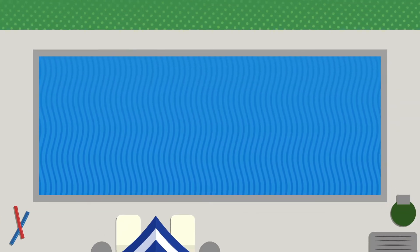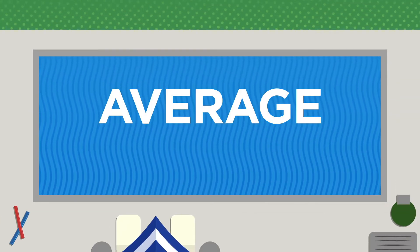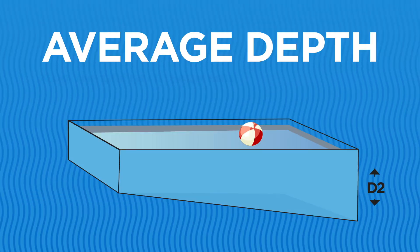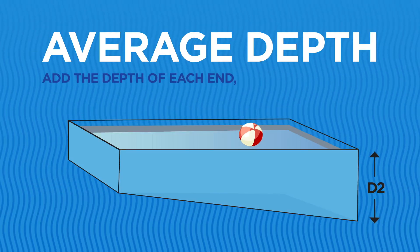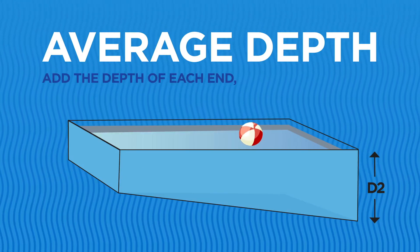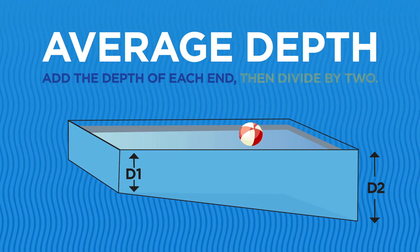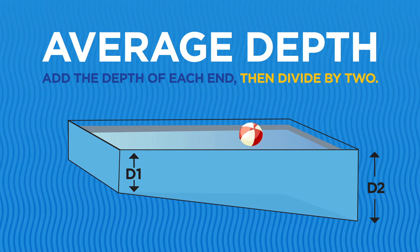To calculate your pool's volume, start with the average depth. Add the depth of the deep end and the depth of the shallow end, then divide by 2.